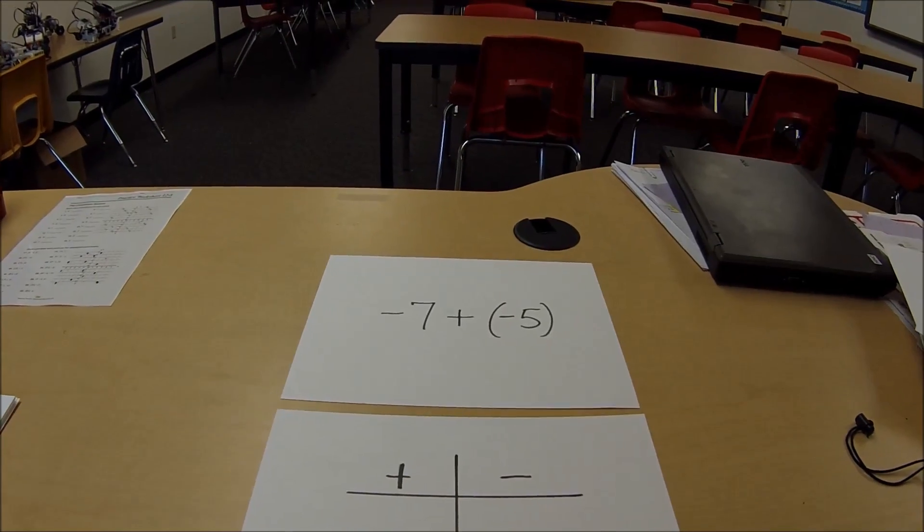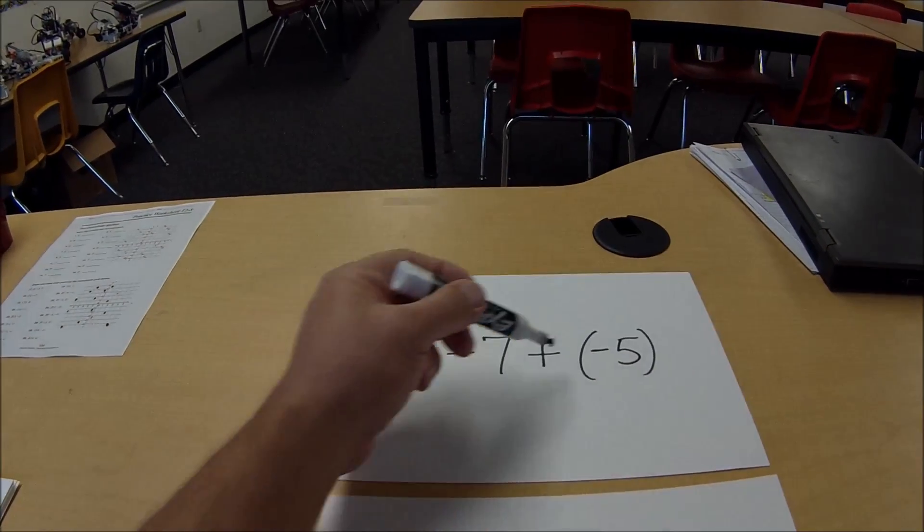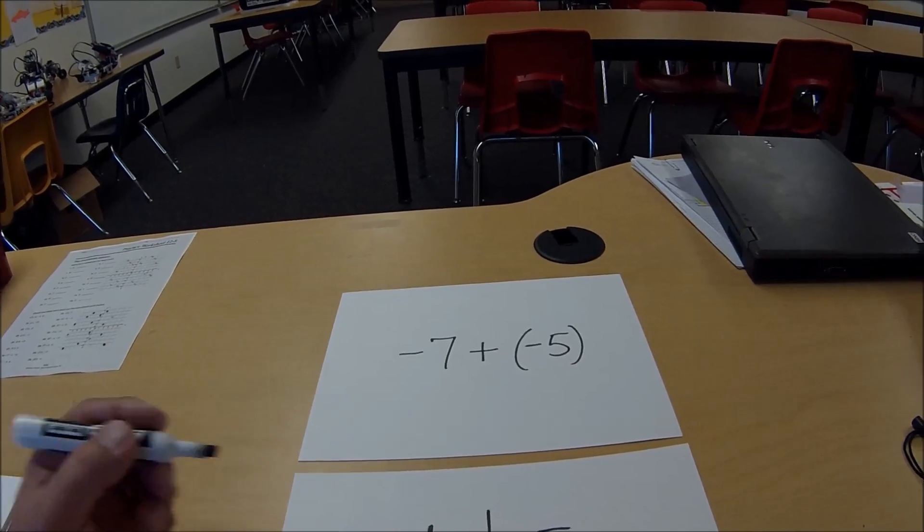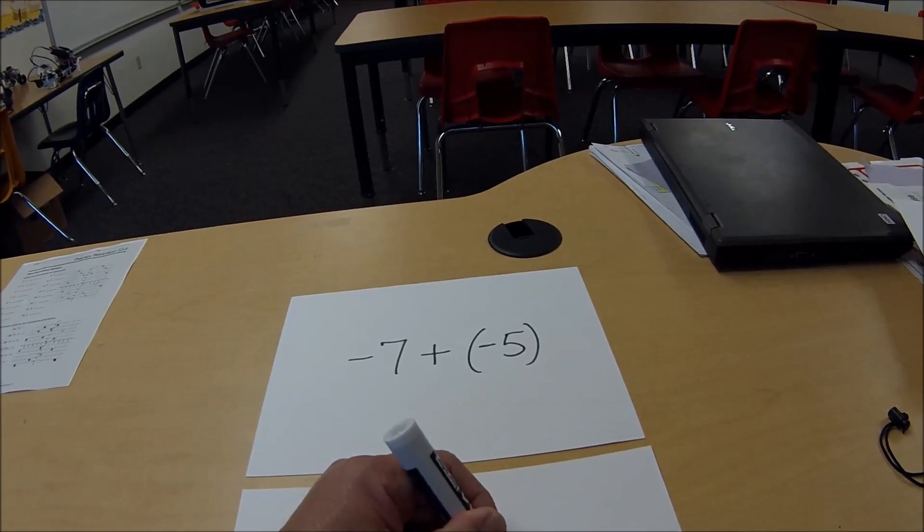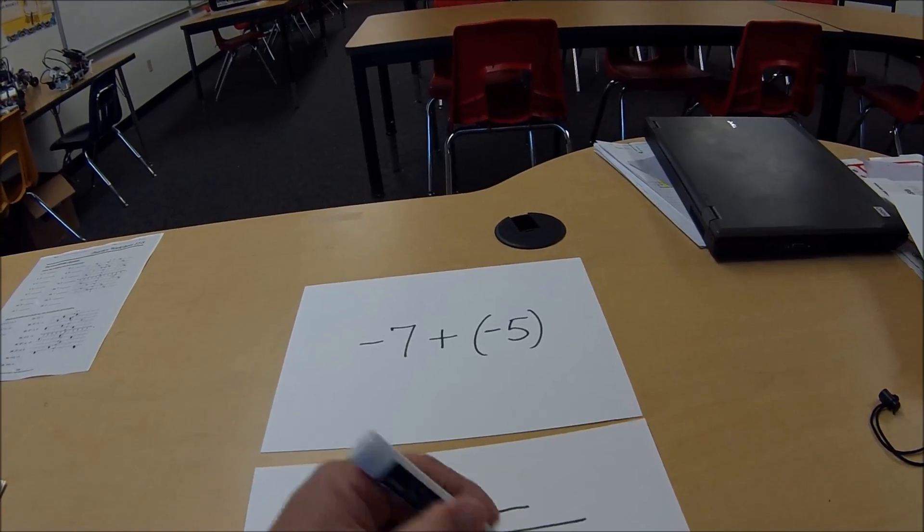But in this case here, they're both on the same team. The negative 7's on the same team as the negative 5. So what I'd end up doing is just putting them on the same team. So the 7's negative, he goes here. And the 5 is negative, so we'd put that here.